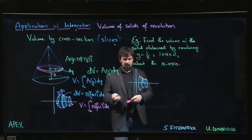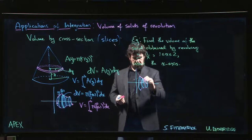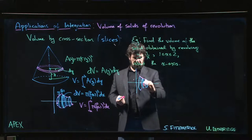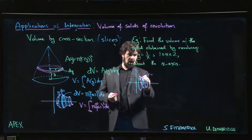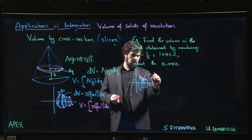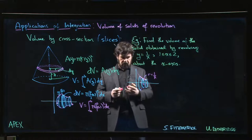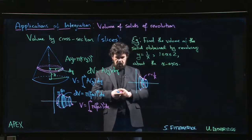So the radius of a disk, here's sort of a typical disk at some value x. The radius of that disk is just going to be the y value. y is equal to 1 over x. So the radius is 1 over x.